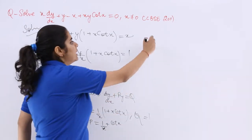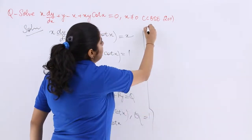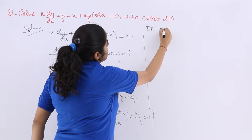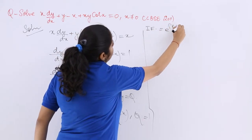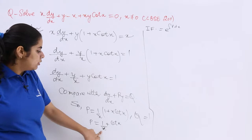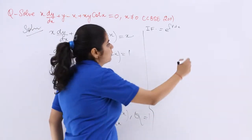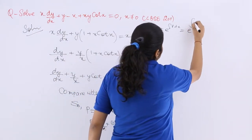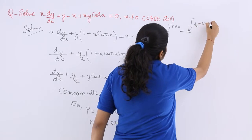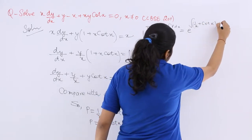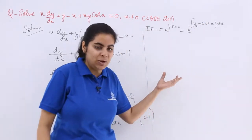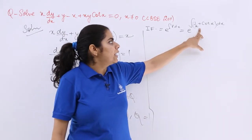Now the next step is to find out the integrating factor which is nothing but e raised to the power integral p dx. Right? What is p? 1/x + cot x. So e raised to the power integral (1/x + cot x) dx.